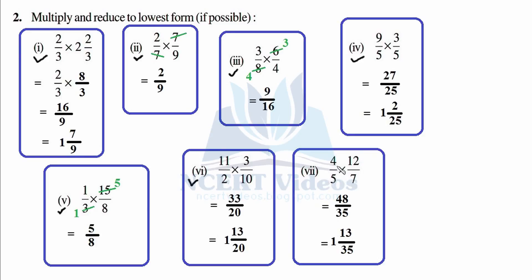The sixth part: 12 fours are 48, 4 over 8, 4 ones are 4. You can also do 7 fives are 35. It is improper, so 35 ones are 35 and remainder 13 when subtracted from 48, giving 1 and 13 over 35. That was question number 2.